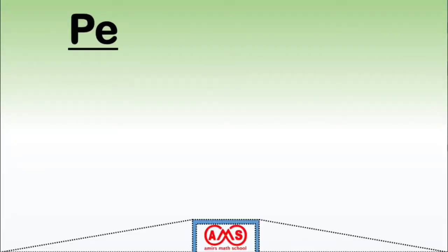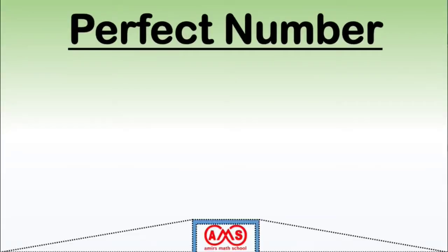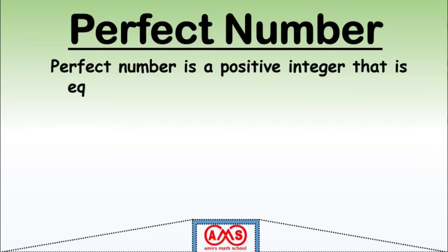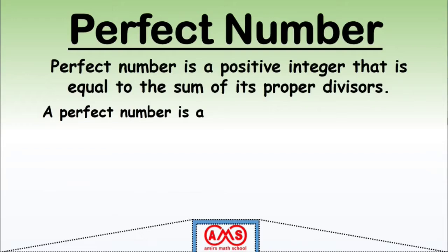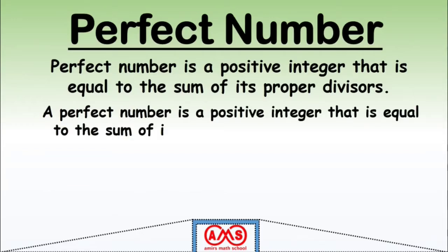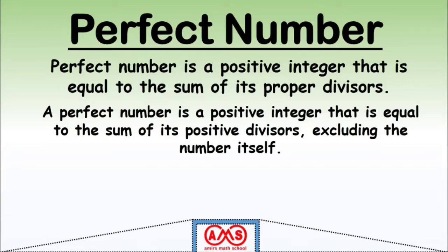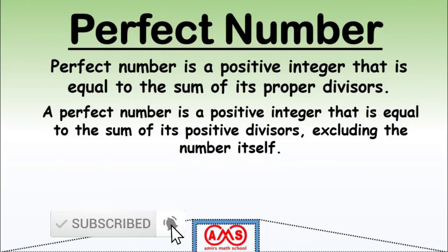Welcome to this video about perfect numbers. A perfect number is a positive integer that is equal to the sum of its proper divisors — that is, the sum of all positive divisors excluding the number itself. If this sum equals the positive integer itself, then that positive integer is known as a perfect number.